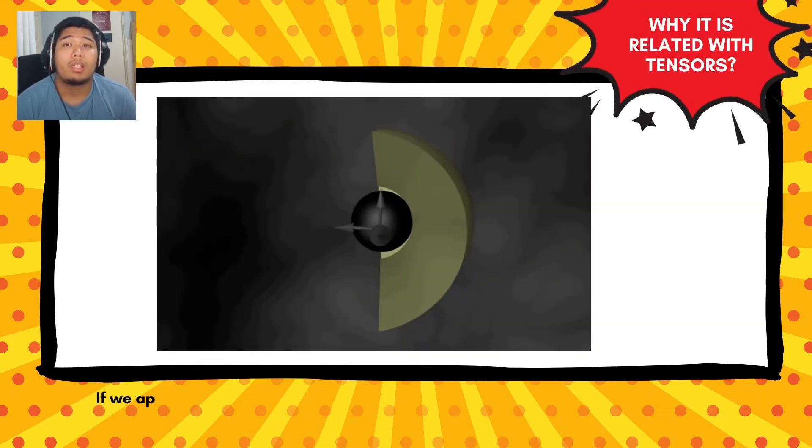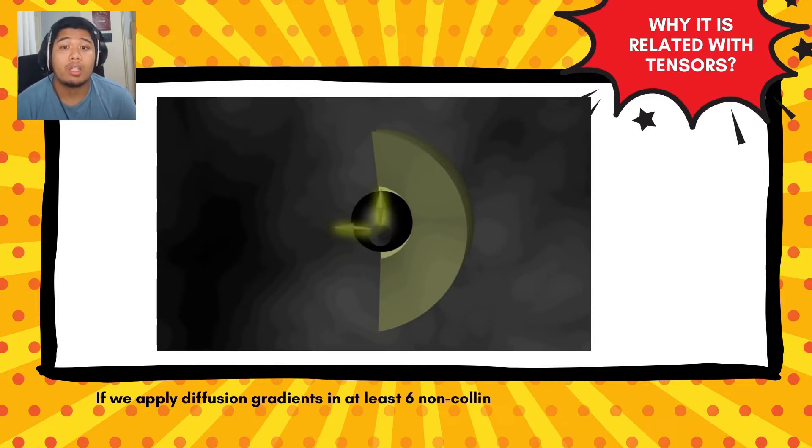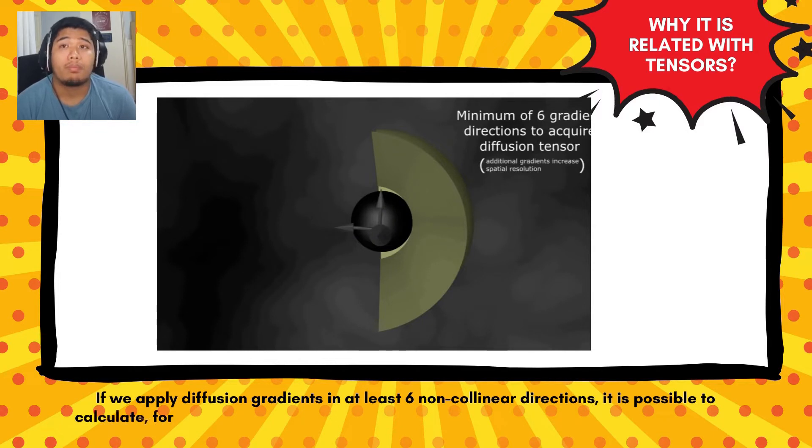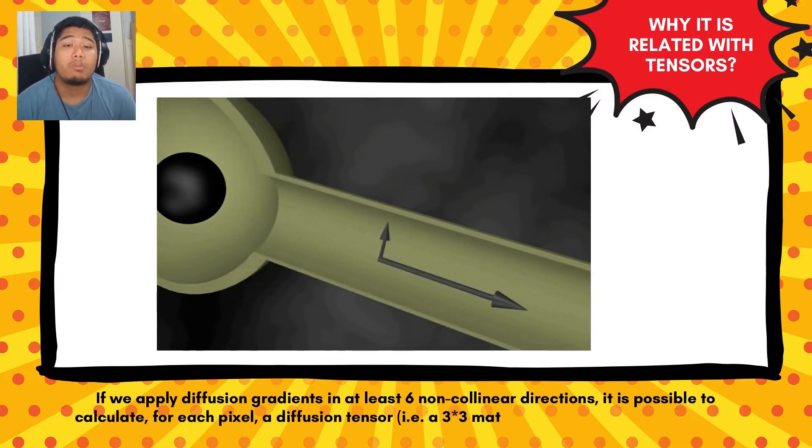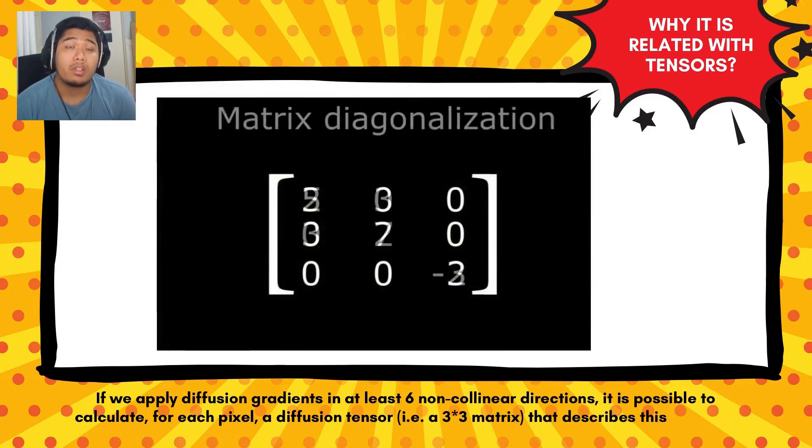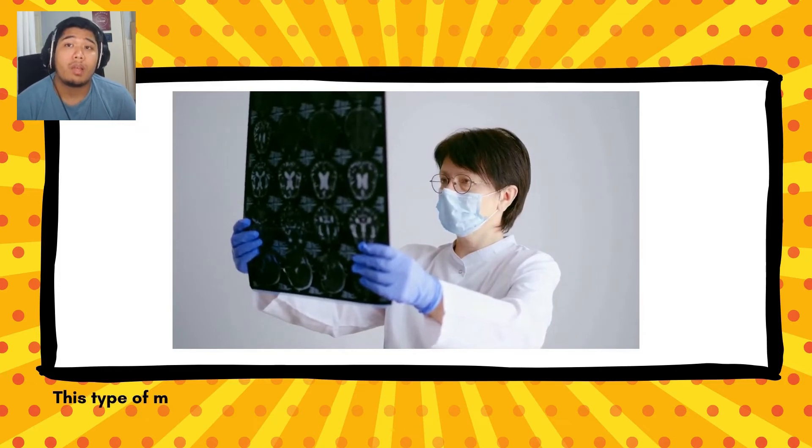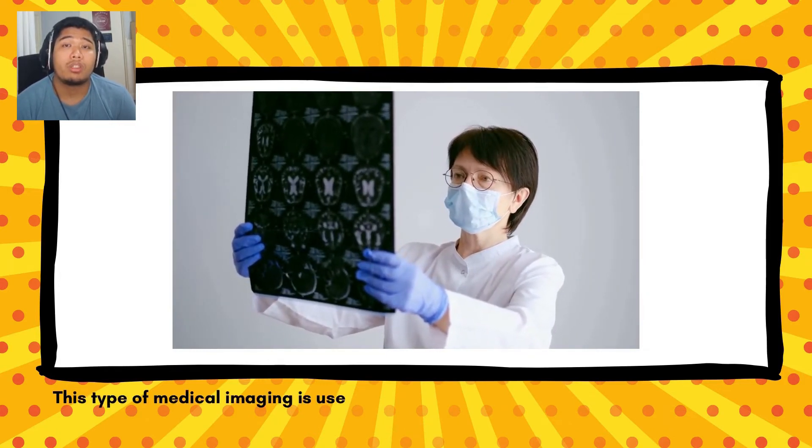If we apply the diffusion gradients in at least six non-collinear directions, it is possible to calculate for each pixel a diffusion tensor—a three by three matrix that describes this diffusion anisotropy.